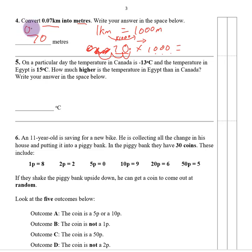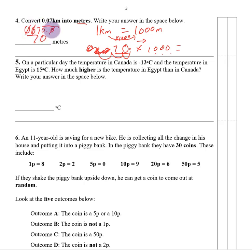You could write 0.0070.0 and that is still right, but get in the habit of simplifying — trailing zeros are not worth anything. So just write 70 metres.